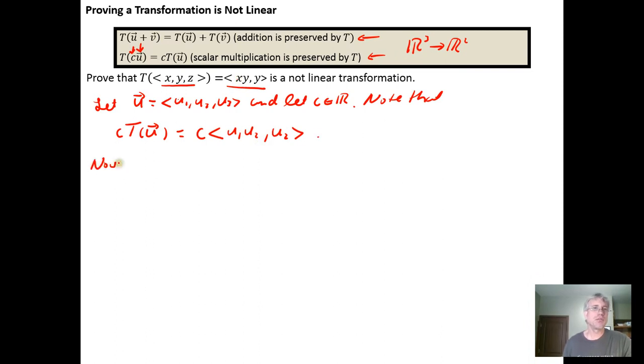So now note that, now let's transform the scaled vector. So now note that if we transform the scaled vector, that means that we're transforming the vector C distributed into the vector components for U.